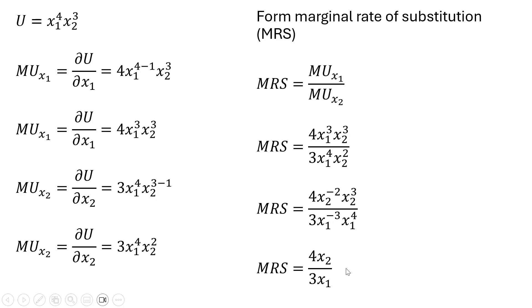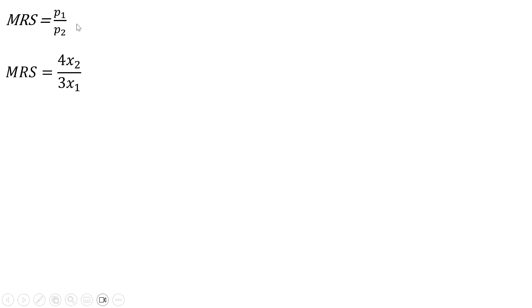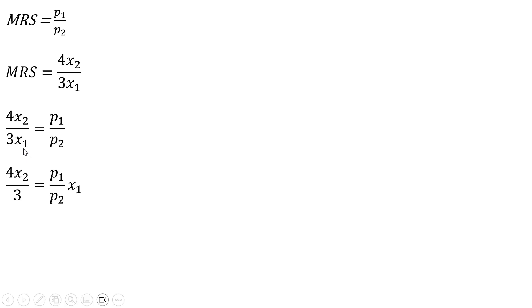Now we're going to set the marginal rate of substitution equal to the ratio of the prices — P subscript 1 divided by P subscript 2. Then we solve this for Good 1, x subscript 1. Multiplying both sides through by Good 1 gives us the x subscript 1 term, and then multiplying through by the reciprocal — Price of Good 2 divided by Price of Good 1 — leaves us with our result for x subscript 1.